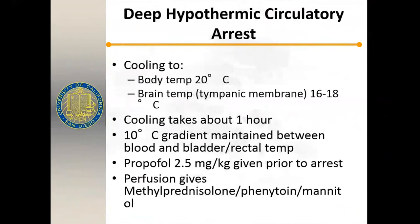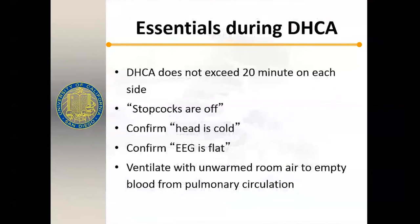Cooling should be uniform, aiming for a core body (bladder) temperature of 20 degrees Celsius, with the brain or tympanic temperature around 16 degrees. Cooling typically takes about an hour depending on body size. We maintain a gradient of 10 degrees Celsius and don't cool too rapidly to ensure uniform cooling. We limit deep hypothermic circulatory arrest to 20 minutes at a time, then reperfuse. We can do multiple 20-minute episodes — we've gone as far as 120 minutes of total circulatory arrest with excellent outcomes and no neurologic effects.